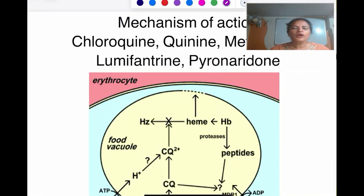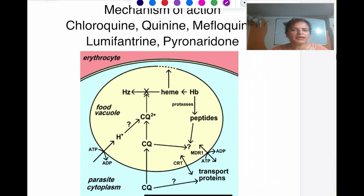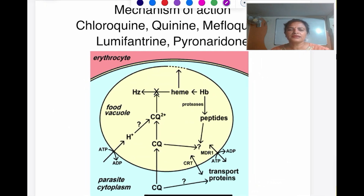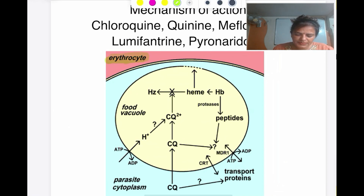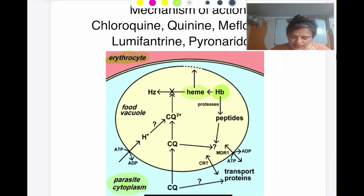For the mechanism of action of chloroquine: several drugs share this mechanism — chloroquine, quinine, mefloquine, lumefantrine, halofantrine, and pyronaridine all act the same way. The parasite resides in the erythrocyte and uses hemoglobin from the RBC for its survival. When it uses hemoglobin, heme is liberated, which is very toxic. This heme is normally converted into the non-toxic pigment hemozoin. This occurs inside the food vacuole, where the environment is acidic.